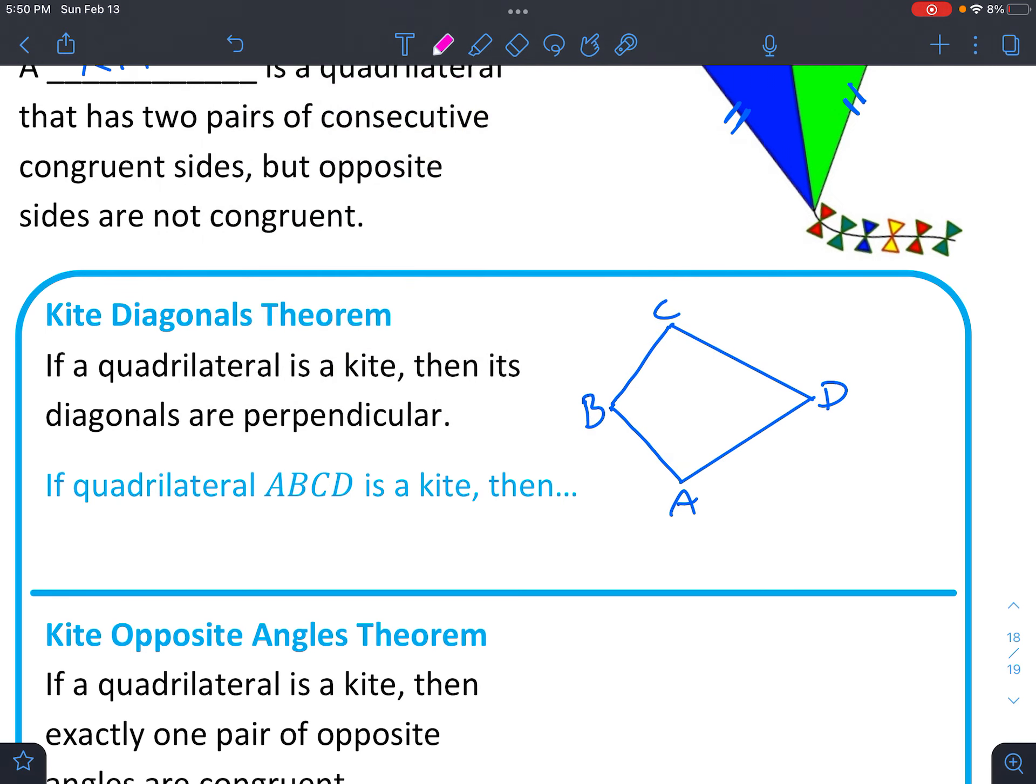And we're going to draw the diagonals, going like this. Mine's not perfect, of course. It says if a quadrilateral is a kite, then its diagonals are perpendicular. So you can draw a little right angle there.